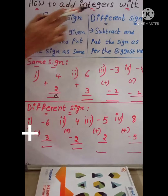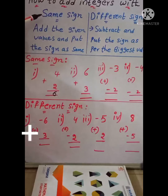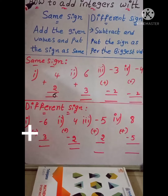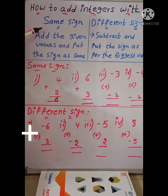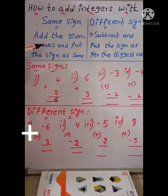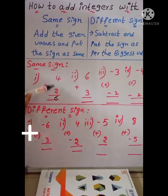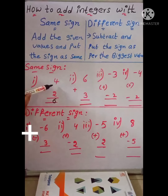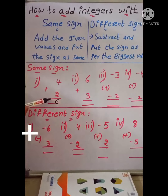How to add integers with the same sign and different sign. First, we will discuss how to add integers with the same sign. Whenever we are adding numbers with the same sign, just add them and put the sign as the same. If we add both positive numbers, just add them and put the sign as positive. Whenever we are adding both negative values, just add them and put the sign as negative.